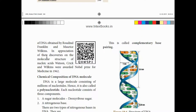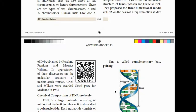In appreciation of their discoveries on the molecular structure of nucleic acids, Watson, Crick, and Wilkins were awarded the Nobel Prize for Medicine in 1962. So DNA has a double helical structure with the components proposed by James Watson and Francis Crick.